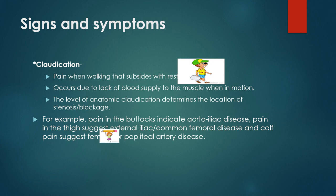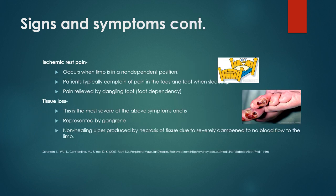Signs and symptoms: claudication is pain when walking that subsides with rest, occurring due to lack of blood supply to the muscle when in motion. The level of anatomic claudication determines the location of stenosis or blockage. For example, pain in the buttocks indicates aortoiliac disease, pain in the thigh suggests external iliac or common femoral artery disease, and calf pain suggests femoral or popliteal artery disease. Basic questions are very critical when doing an arterial study.